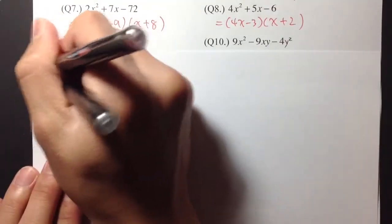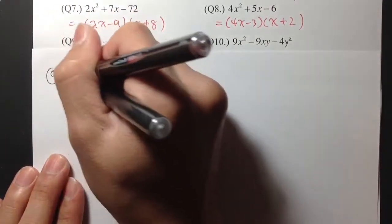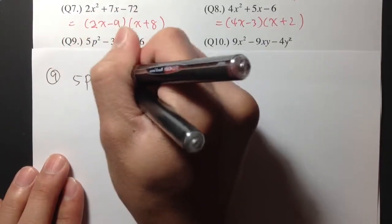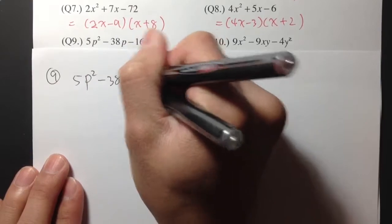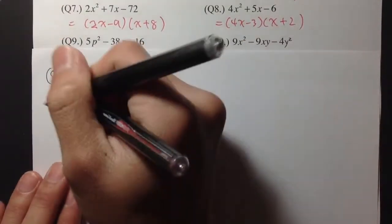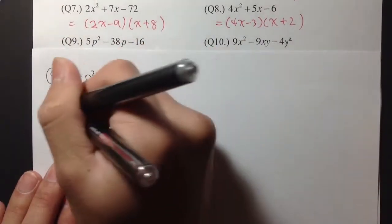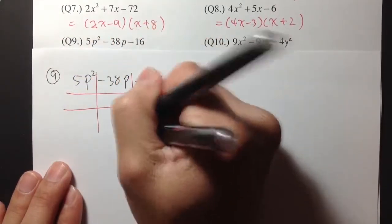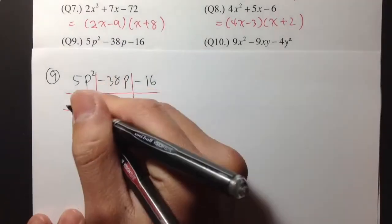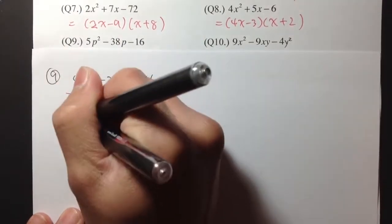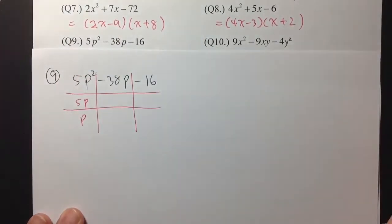Now let's continue with question number 9. I have 5p squared minus 38p minus 16. I'll begin by drawing the tic-tac-toe box. To get 5p squared, I need to have 5p times p.